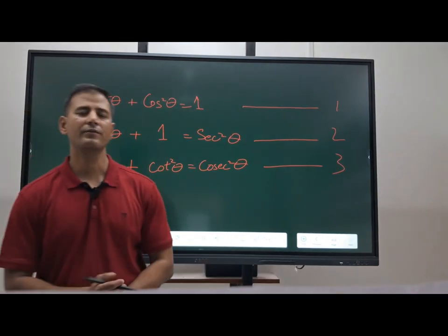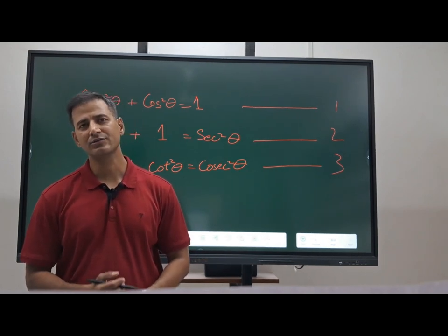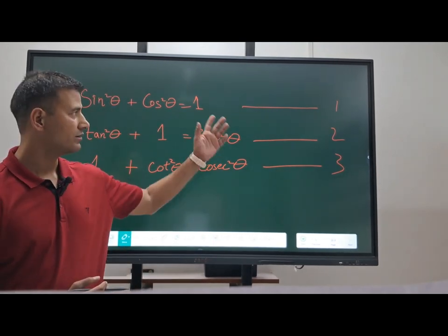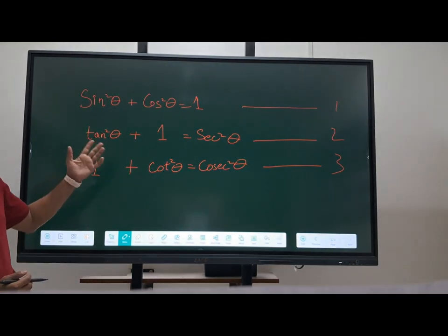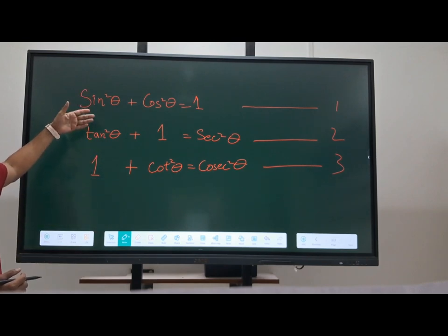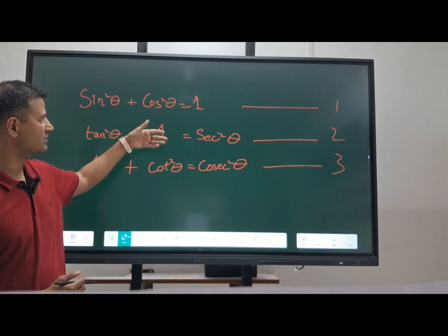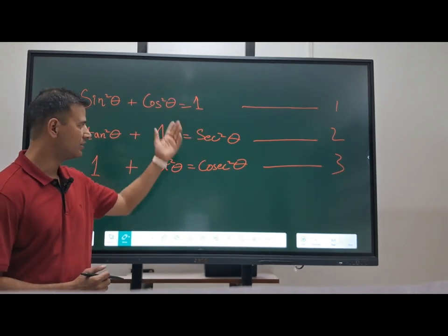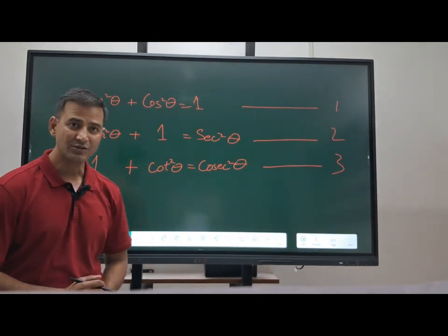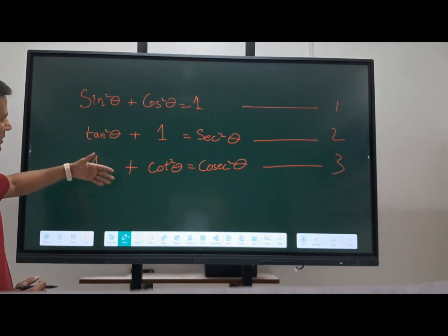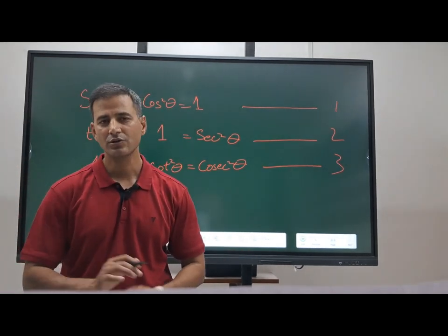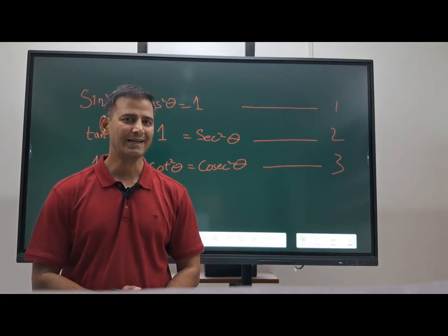Now we will see some trigonometrical identities, or Pythagorean identities. Sin squared theta plus cos squared theta equals 1 — that is equation 1. Dividing equation 1 by cos squared theta gives tan squared theta plus 1 equals sec squared theta, since sin/cos becomes tan and 1/cos² becomes sec². Dividing equation 1 by sin squared theta gives 1 plus cot squared theta equals cosec squared theta. These are the 3 identities we will use in the later part of this lecture.